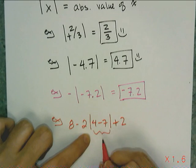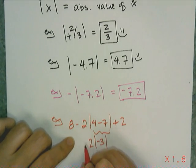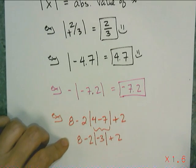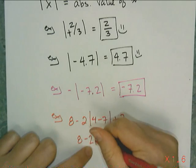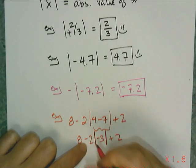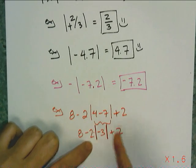So 4 minus 7 is negative 3, the absolute value, and then 8 minus 2 plus 2, just recopying the rest of the problem. And I have to remember that if I see a grouping symbol and a number on the outside, there is an implied multiplication in between the number and the grouping symbol.